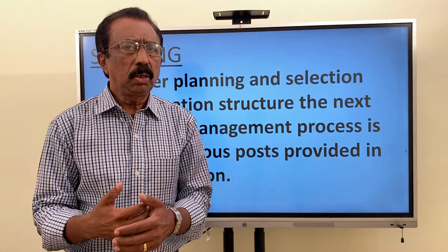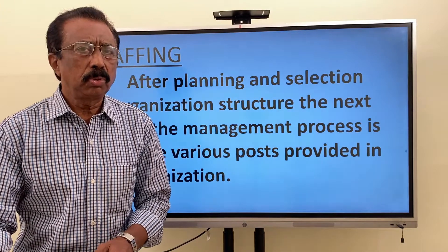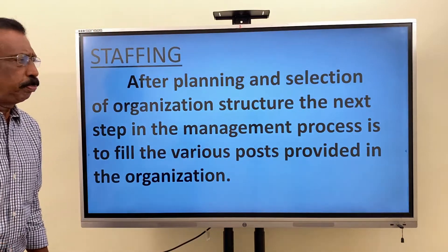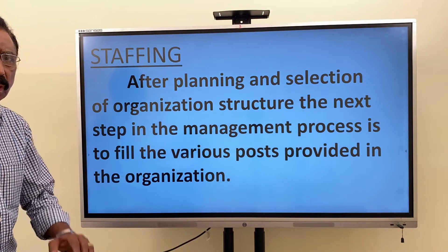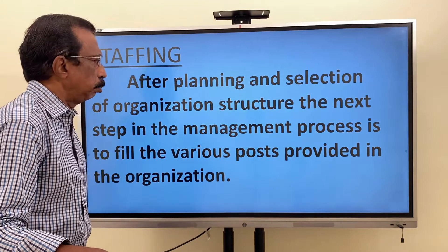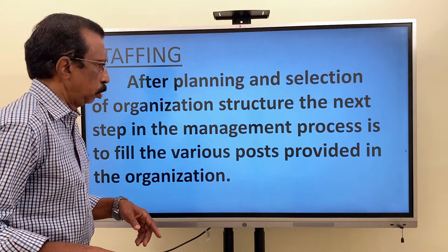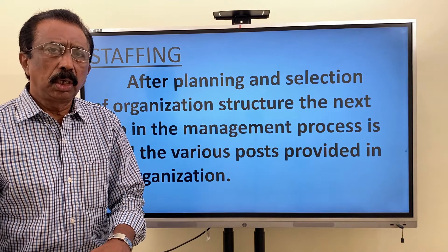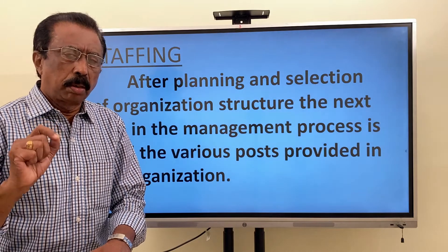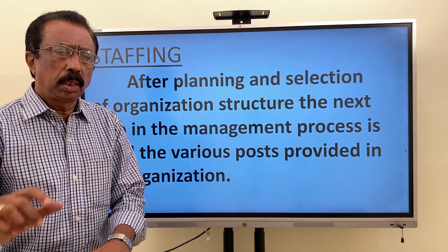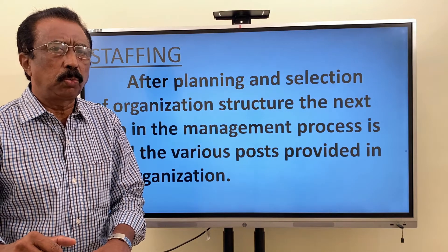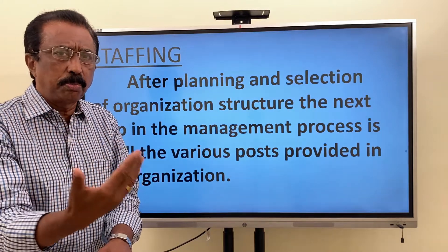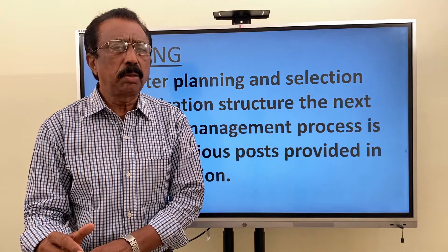Something has to be done so that staff members will continue in the business organization. After planning and selection of organization structure, which we have seen already, the next step in the management process is to fill the various posts provided in the organization. We studied the process of organization structure — finding out and dividing departments, finding out suitable people, and clearly telling them what their duties and relationships are. I should know who is my superior and who is my subordinate — then only the work will go on very well.